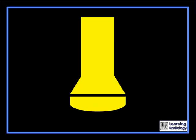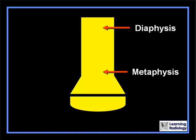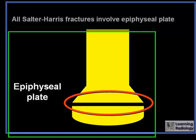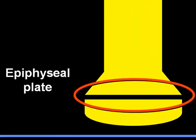The bone is divided into the diaphysis, the metaphysis, and the epiphysis. Between the metaphysis and the epiphysis lies the epiphyseal plate, also known as the physis or the growth plate. All of the Salter-Harris fractures are going to involve the open epiphyseal plate.